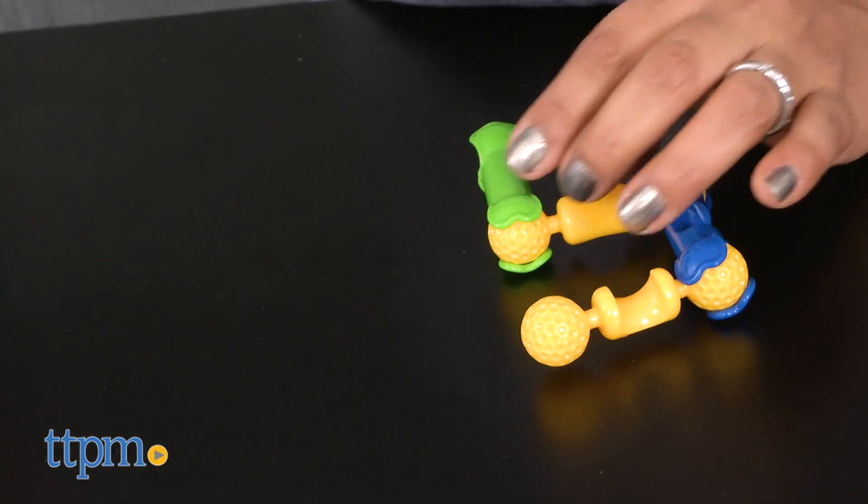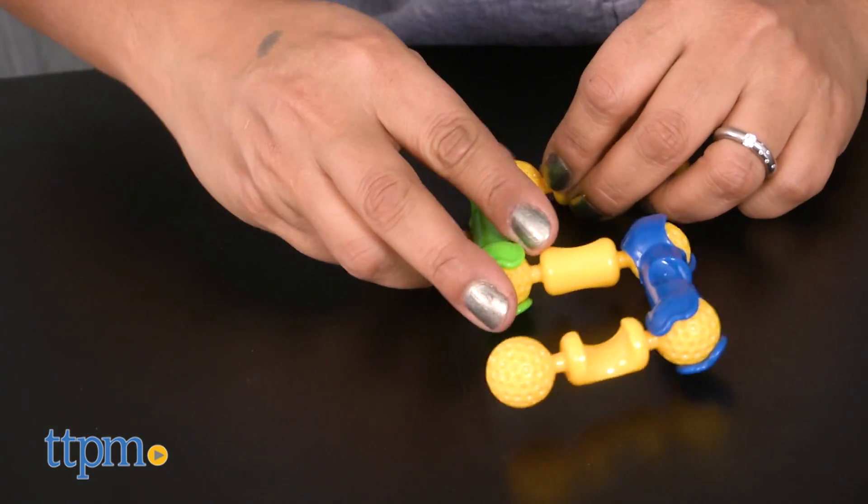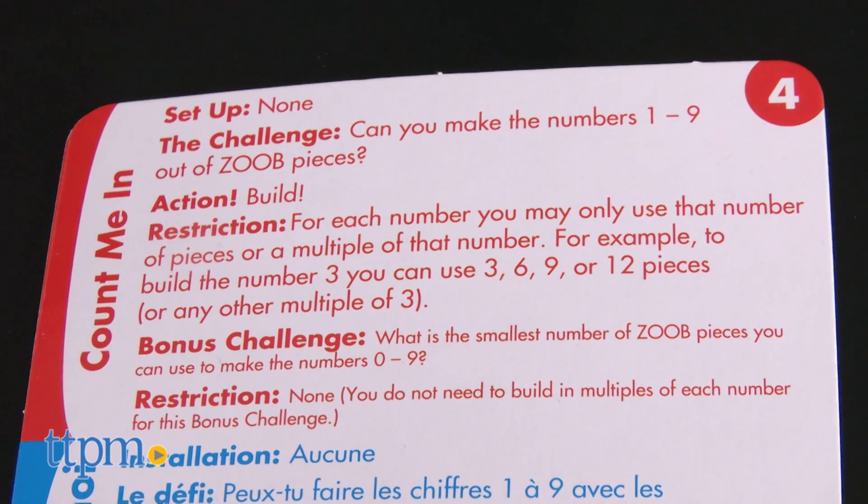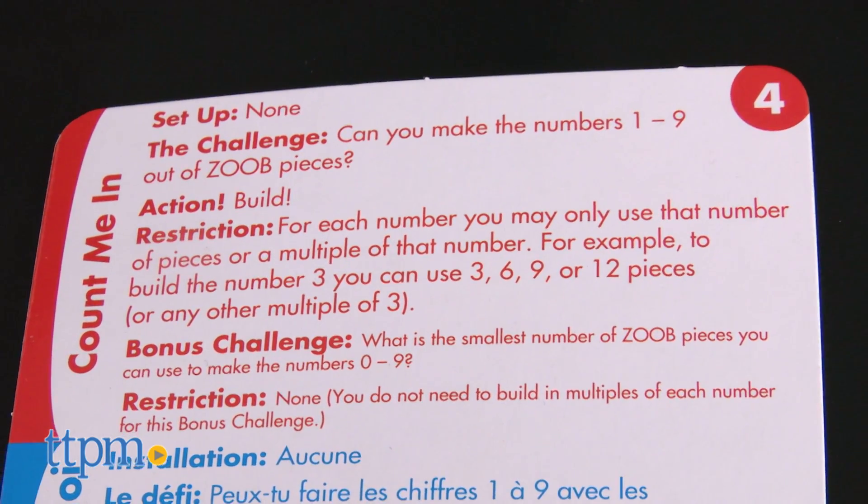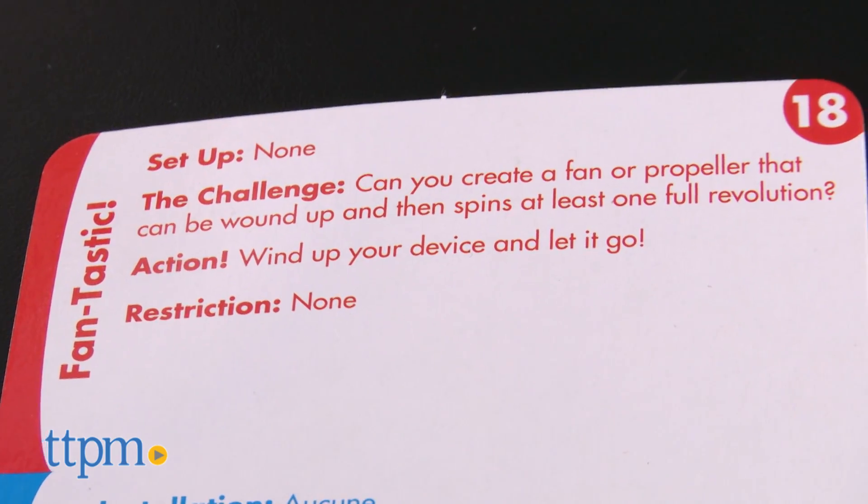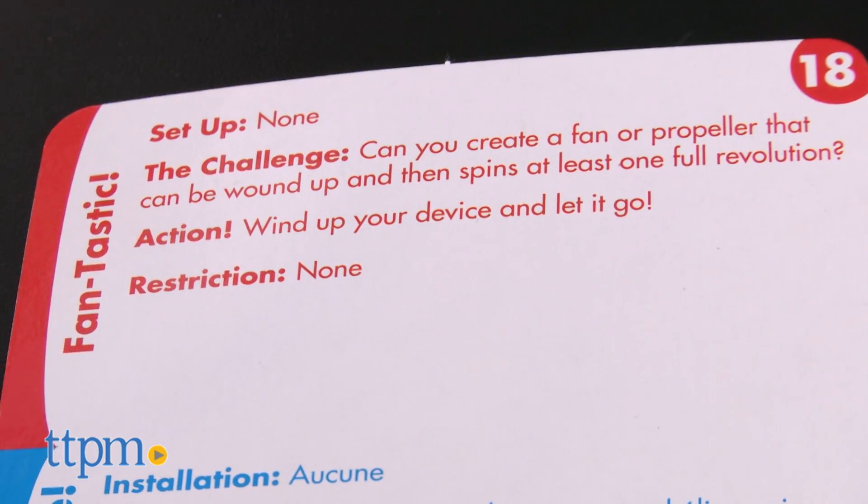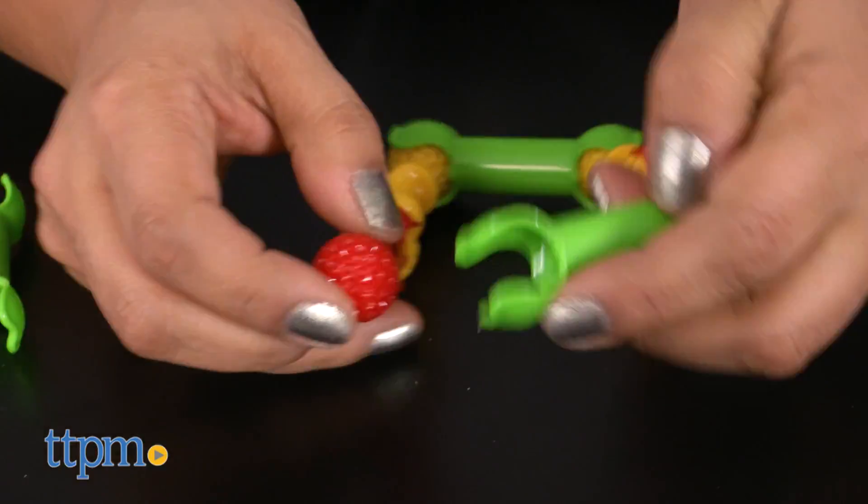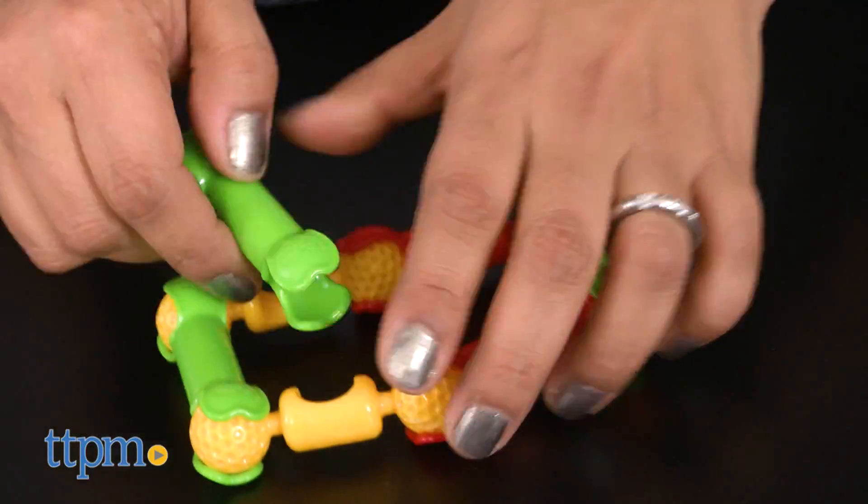The challenges on the challenge cards include simple prompts like Can you make the numbers 1-9 out of ZOOB pieces? Or a bit more challenging projects like Can you create a fan or propeller that can be wound up and then spins at least one full revolution?